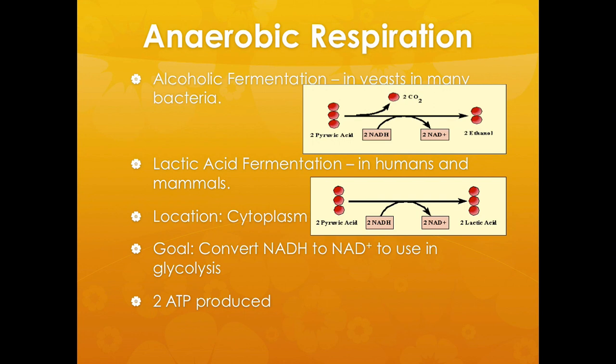The location of anaerobic respiration is within the cytoplasm, similar to glycolysis, which also happens in the cytoplasm. The overall goal of anaerobic respiration is to convert NADH to NAD+ for use in glycolysis. Two ATPs are produced within anaerobic respiration. So with aerobic respiration you have the potential to produce 36 net ATPs, but if there's no oxygen present, you can only undergo anaerobic respiration and you can only get two ATPs.